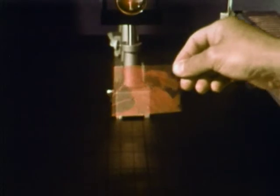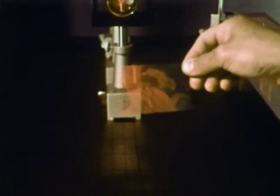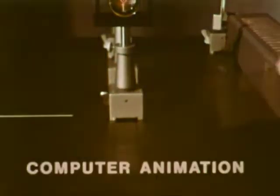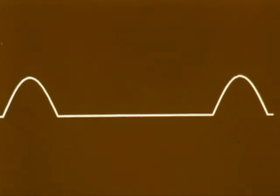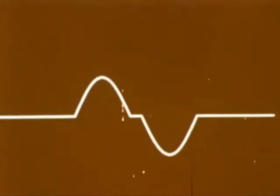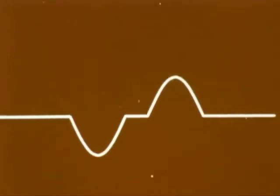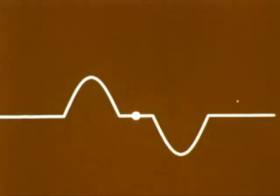In order to understand holography, you have to understand something about waves. When waves meet, their effects are additive. When two crests meet, we get an increased effect. But when crest meets trough, their effects cancel out. This interference effect is important in holography.